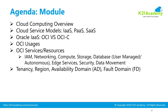Then we'll look at tenancy — what does tenancy mean. Then what a region means: as of July 2019, there are seven regions across different continents, and Oracle is adding more. Each region can have up to three availability domains — some have one, some have three. We'll also look at fault domains: each availability domain has three fault domains.